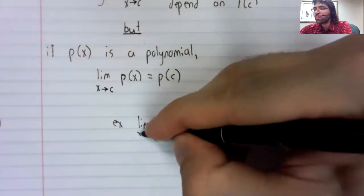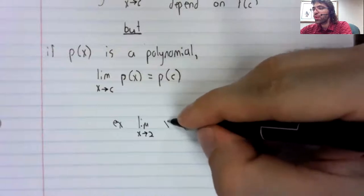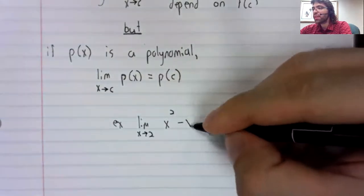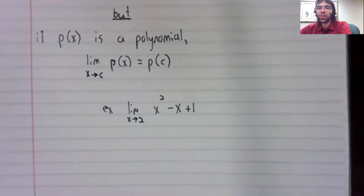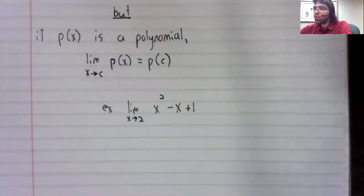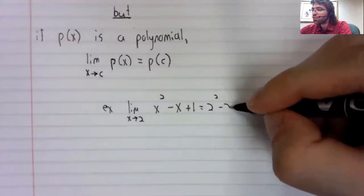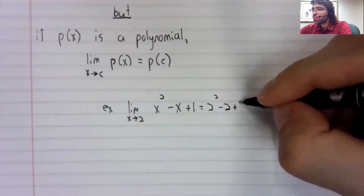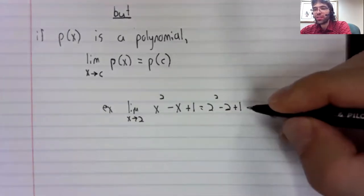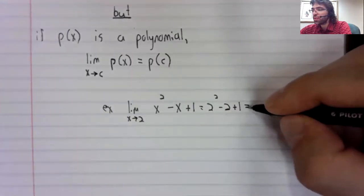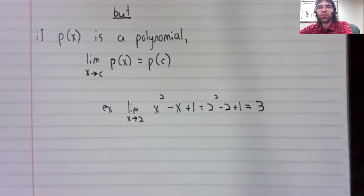So, for example, with a limit as x approaches two of x squared minus x plus one. This is a polynomial. So, to find this limit, we simply plug this two into x. So, four minus two plus one is three.